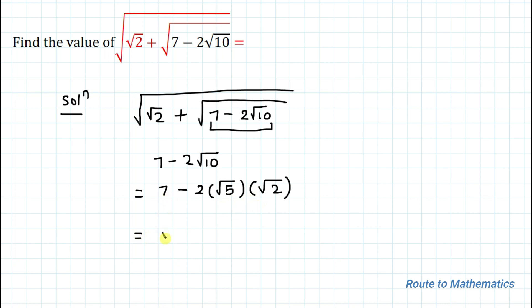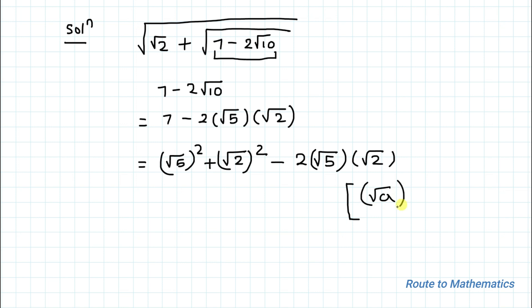Now we can write 7 as root 5 square plus root 2 square minus 2 root 5 multiplied with root 2, because root square is nothing but that number itself. So root 5 square is 5 and root 2 square is 2. So 5 plus 2 is 7. So we just split this 7 as root 5 square plus root 2 square.